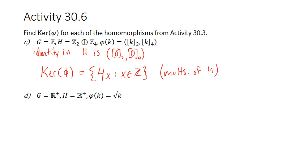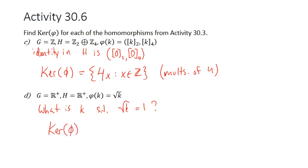For part D, we're going from the positive reals to the positive reals, so these are multiplicative groups. The identity is 1. We want to know what k satisfies square root of k equals 1. Obviously there's only one k that works, and that's just 1. So this kernel is just the set containing the element 1.